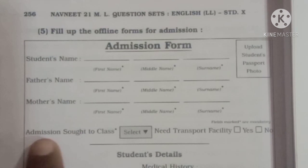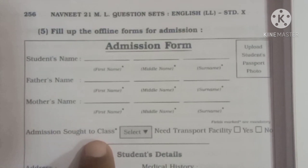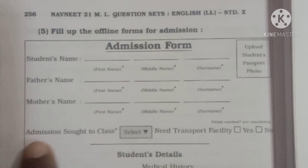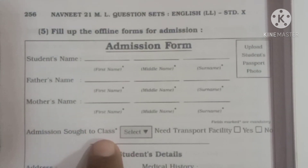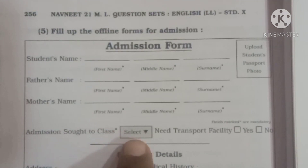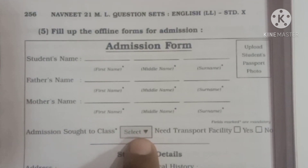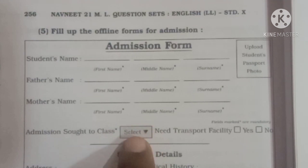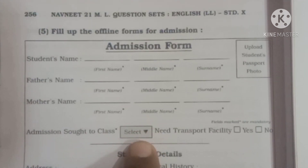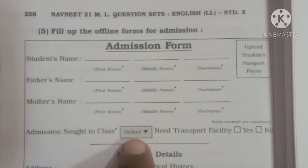Now, admission sought to class. You can select class 5th, 6th, 7th, 8th, 9th, or 10th — write it here. And then online SL, select karai chai.